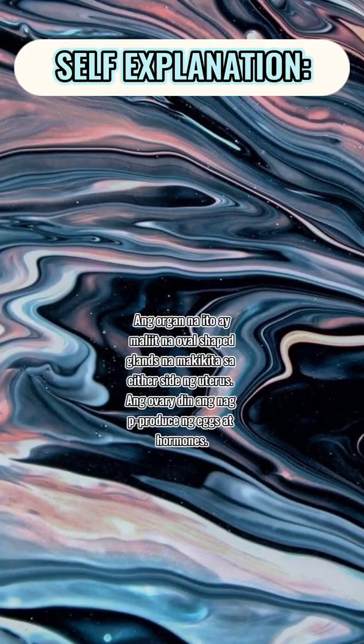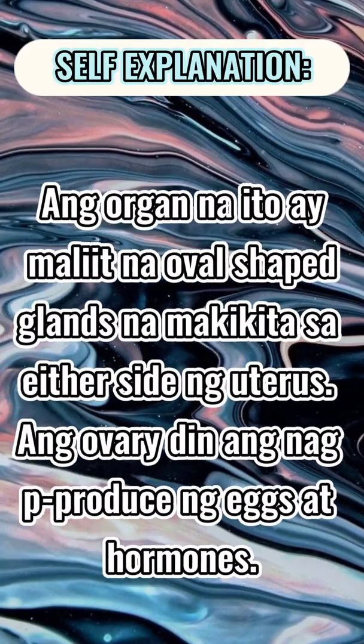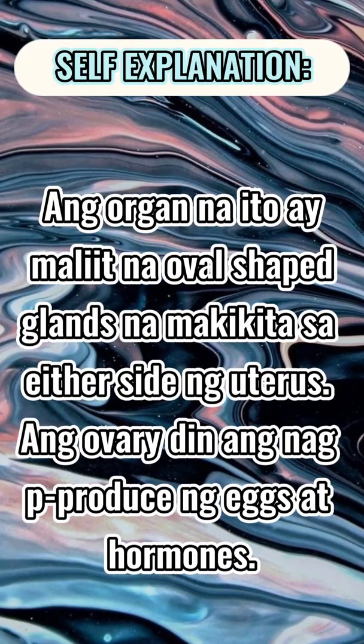Ovary — these are small oval-shaped glands that are located on either side of the uterus and produce eggs and hormones. Ang organ na ito ay maliit na oval-shaped glands na makikita sa either side ng uterus. Ang ovary din ang nagpo-produce ng eggs at hormones.